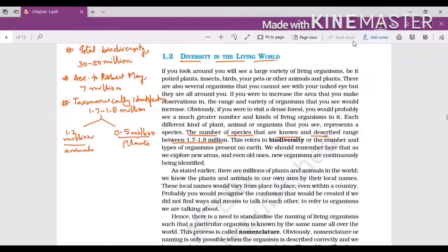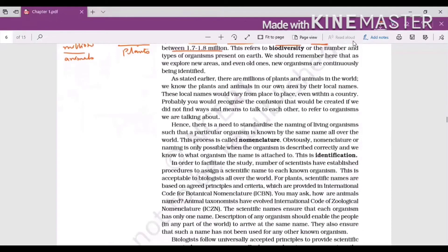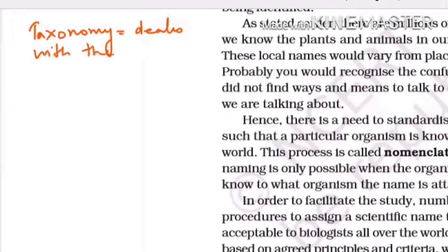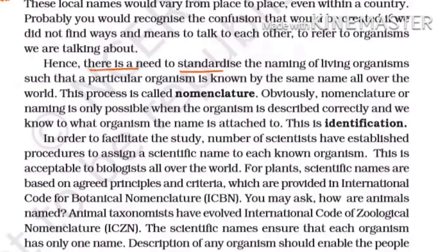Since this vast diversity exists, we need to standardize organisms into proper categories. That is why the branch of taxonomy was developed — taxonomy is a branch of biology. We need to classify them, but before classification we should also know naming. Hence there is a need for standardizing the naming of living organisms so that a particular organism is known by the same name all over the world, and this process is known as nomenclature.